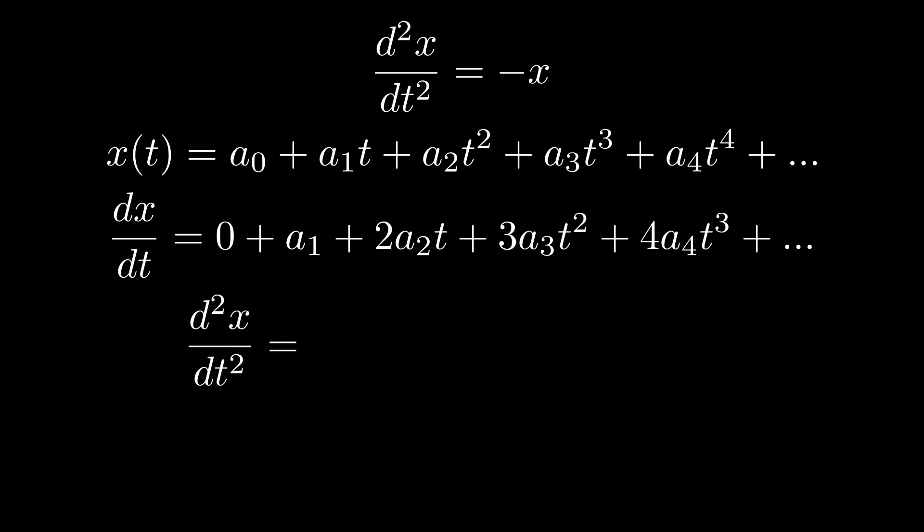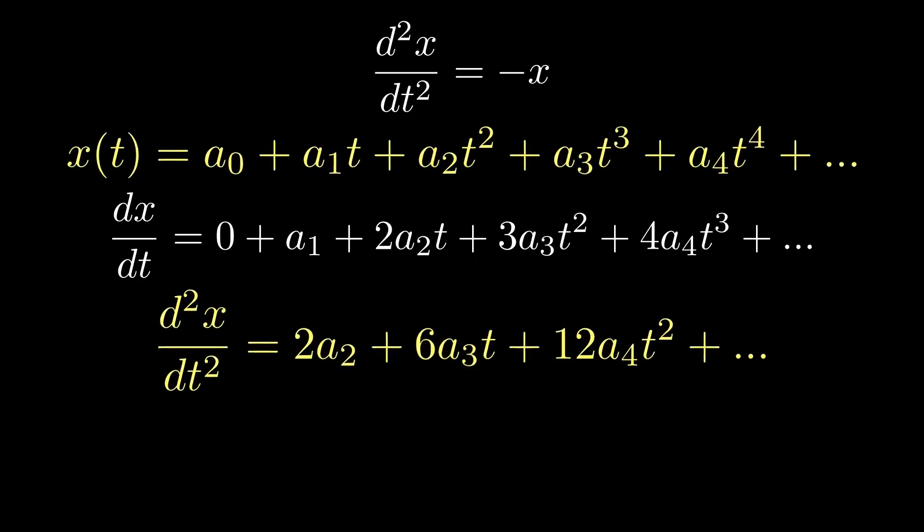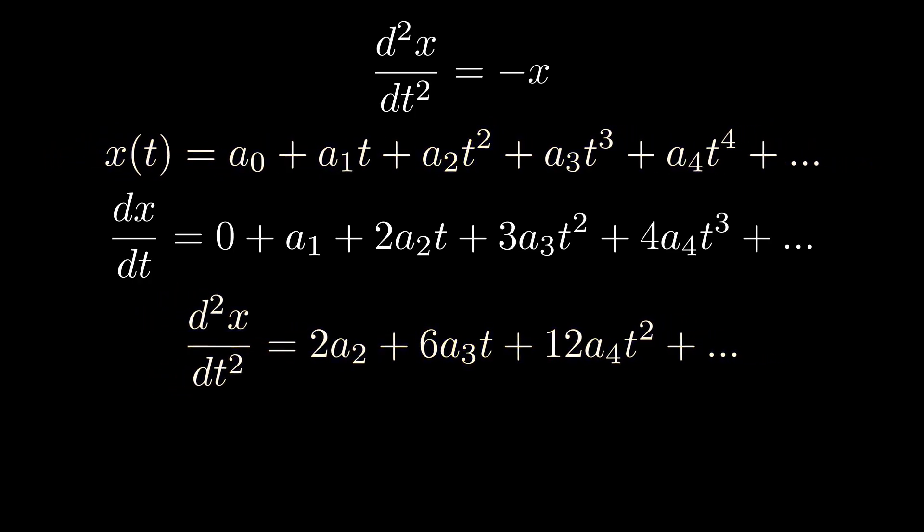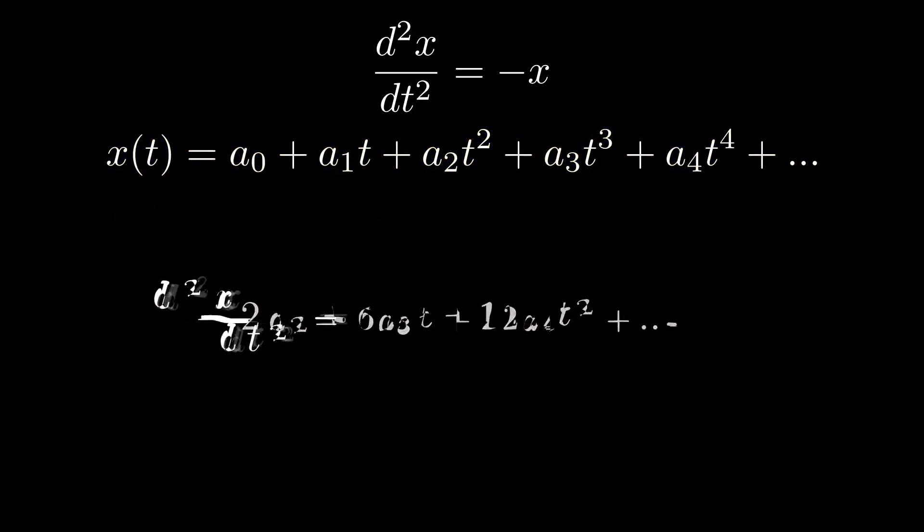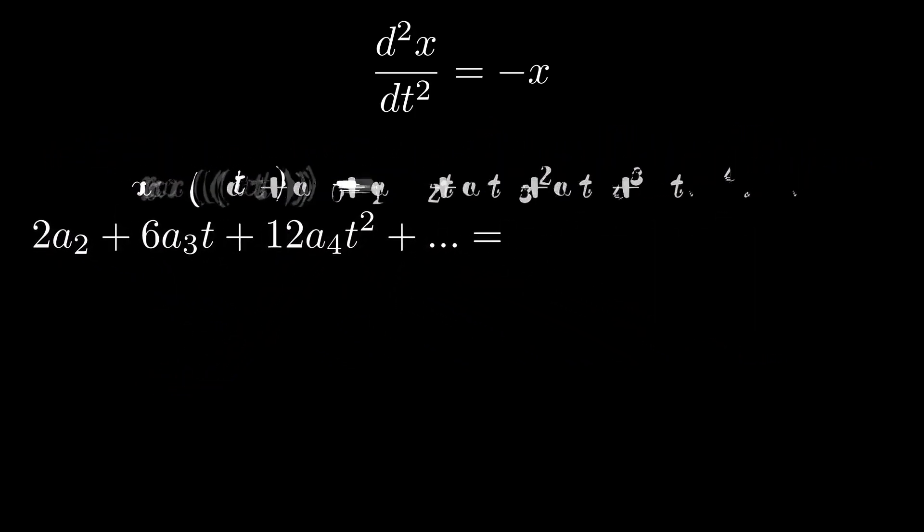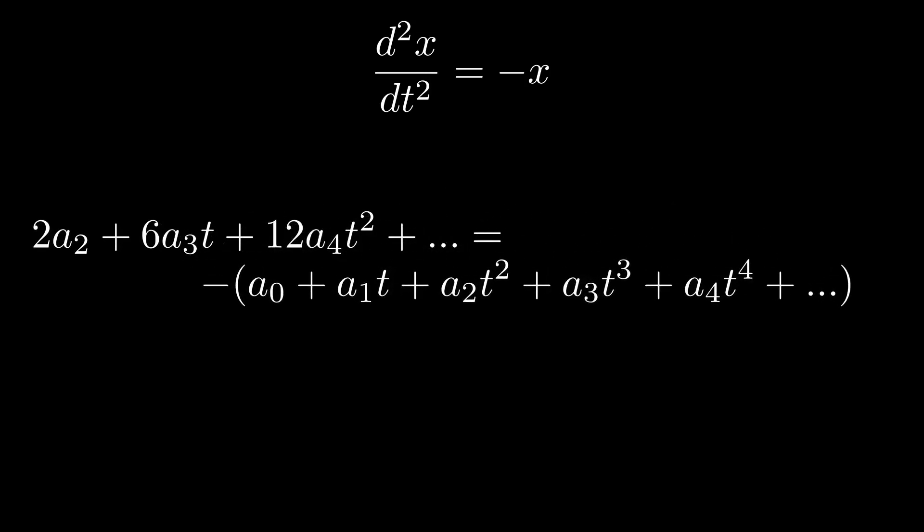Differentiating it once again, we get 2a2 plus 6a3t plus 12a4t square. In the interest of our differential equation, we care about these two equations. Let's substitute them into the differential equation. We have infinite series on both the sides. So, now let's write them back in the compressed form.